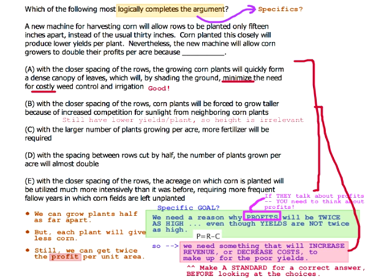As far as C and E, C means you've got more cost — so this is bad. This goes the wrong way, the opposite of what you want. You would like to see lower cost.